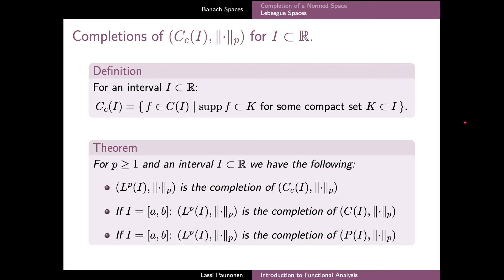Our main result shows that the Lebesgue space LP is indeed a completion of this space CcI. Moreover, if the interval I is closed and finite, then LP is also the completion of the space C of continuous functions on I together with the P-norm. In fact, for a closed and finite interval, the space C of continuous functions is precisely equal to the space of continuous functions with compact support, because in the definition of CcI we can always take K to be the full interval I if it is closed and bounded.